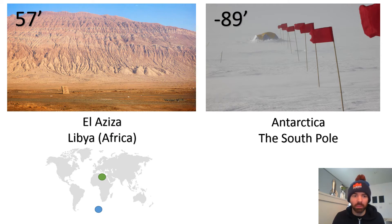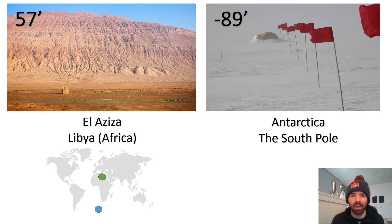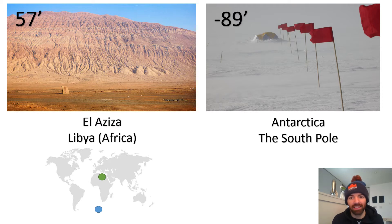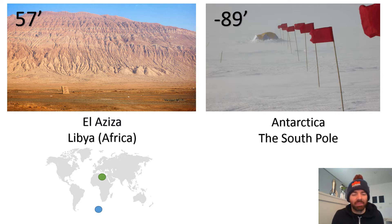Just to prove this point: the hottest temperature ever recorded on Earth was 57 degrees, and that was in El Azizia, which is in Libya, Africa — that's the green dot on the map. You can see it's kind of in the centre of the map — not high, not low. And the coldest temperature ever recorded was at the South Pole in Antarctica, and it was minus 89 degrees. Goodness me, that makes me feel awful just thinking about that. And that is at the bottom of the globe — you can see where the blue dot is.